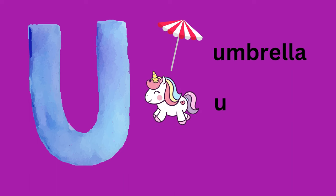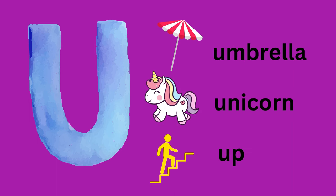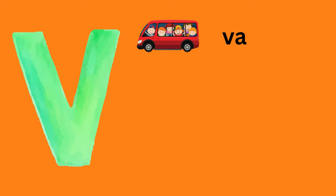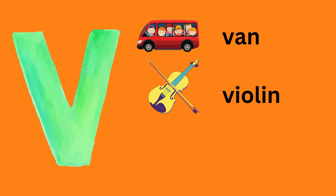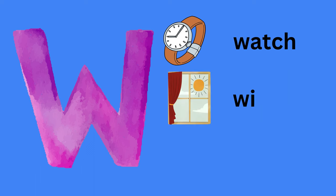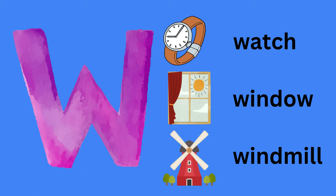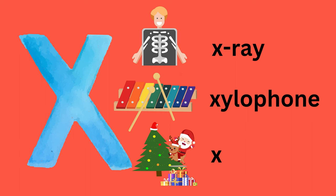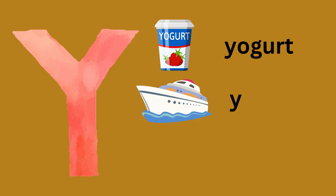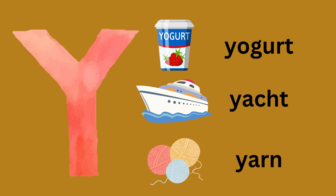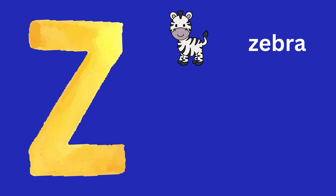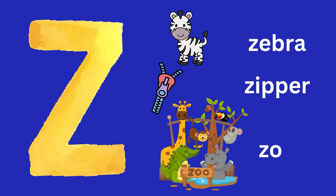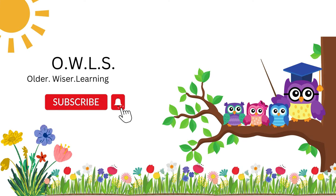U. Umbrella, Unicorn, Up. V. Van, Violin, Vegetables. W. Watch, Window, Windmill. X. X-Ray, Xylophone. Y. Yogurt, Yard, Yarn. Z. Zebra, Zipper, Zoo. See you next time!